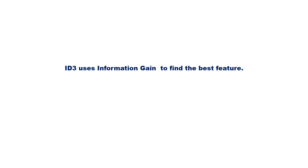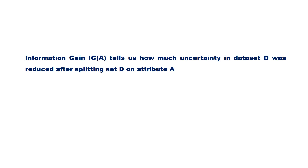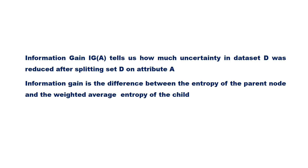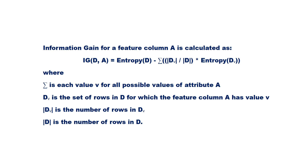ID3 uses information gain to find the best feature. Information gain tells us how much uncertainty in the dataset D was reduced after splitting set D on attribute A. Information gain is the difference between the entropy of the parent node and the weighted average entropy of the child nodes. Information gain for a feature column A is calculated as: entropy of D minus sigma of (|dV| / |D|) times entropy of dV, where sigma is over each value V for all possible values of attribute A.